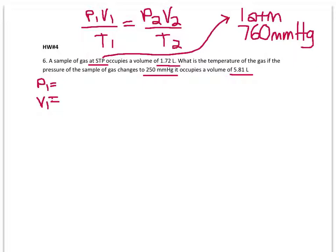In this case, you want to use the 760 as your pressure because your second pressure is in millimeters of mercury. So it'll keep it easy.